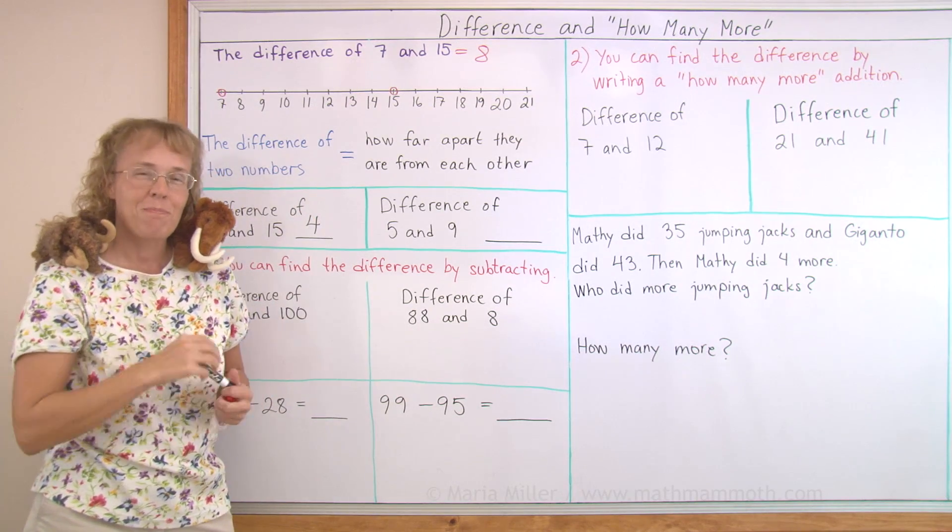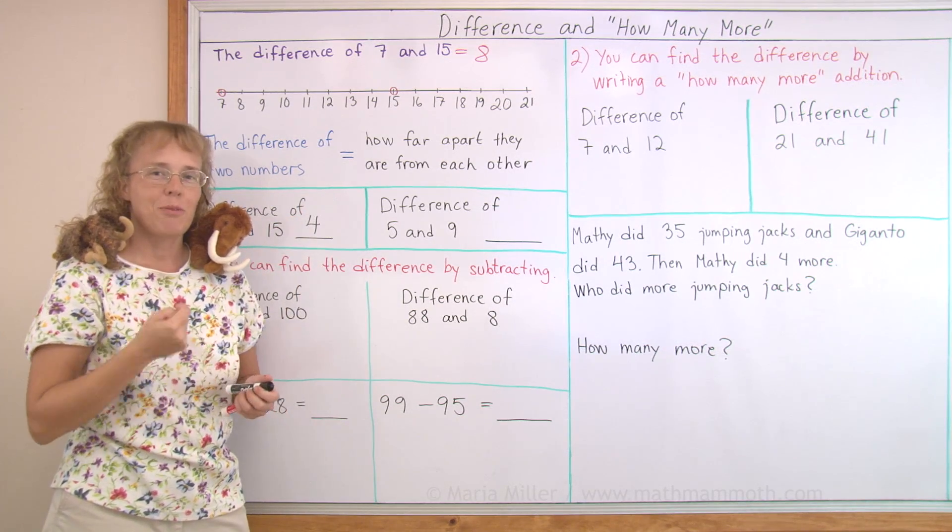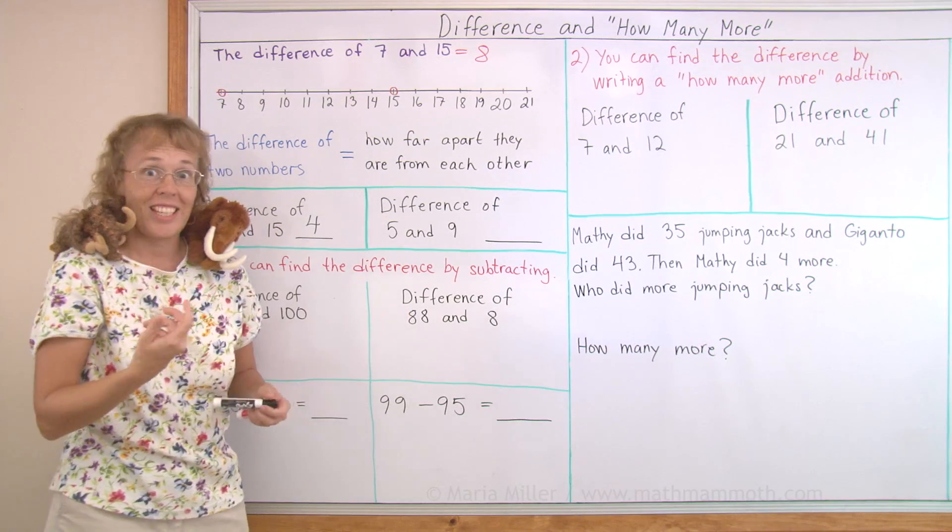Difference of 5 and 9, the same. I don't have a number line to reach down to 5 but I can count from 5 up to 9 and get again 4 steps.